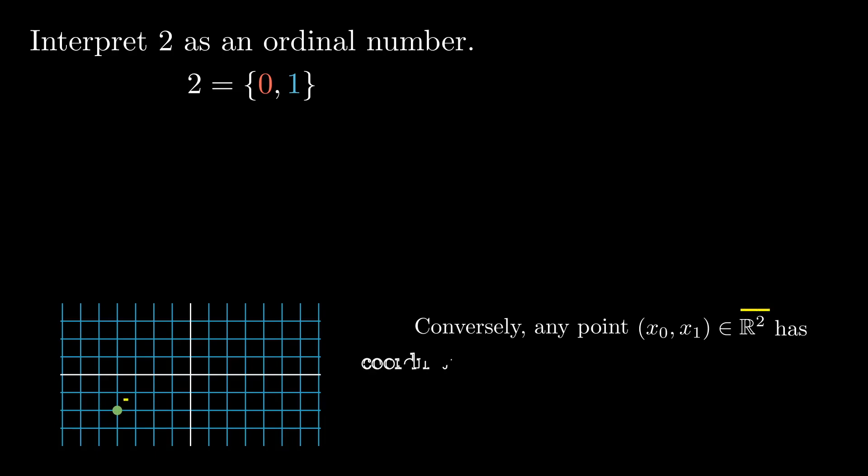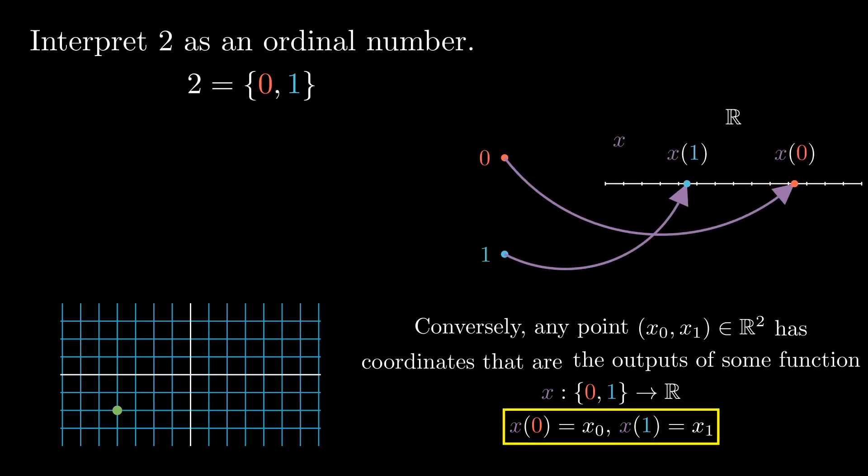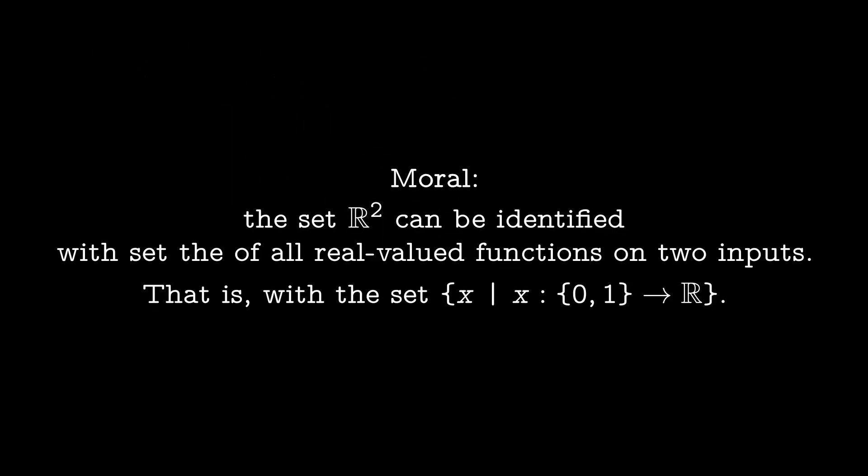Conversely, if I start with a point in the plane, say its coordinates are x sub 0 and x sub 1, then I could define a function x so that when I plug 0 into x, I get x sub 0, and when I plug 1 in, I get x sub 1. The moral of the story is that the set R2 can be identified with the set of all real valued functions on two inputs.